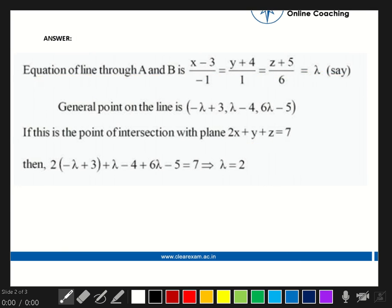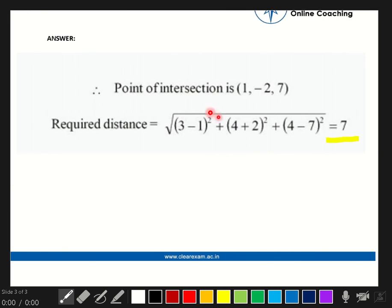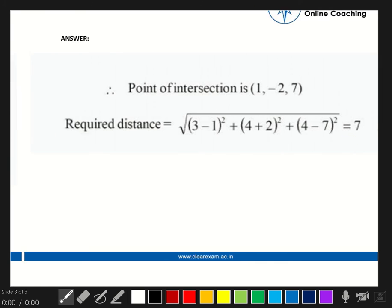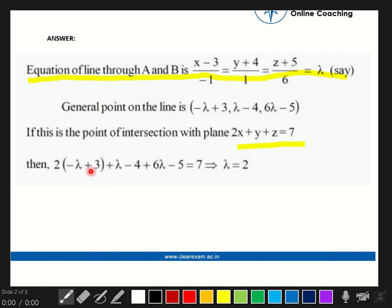Now further solving this question, we will find the point of intersection (1, -2, 7) by putting lambda equals 2 in this equation. By this, x will be 1, y will be -2, and z will be 7.